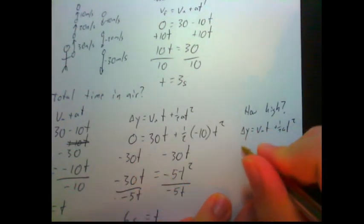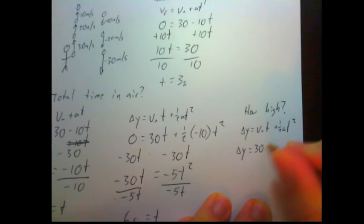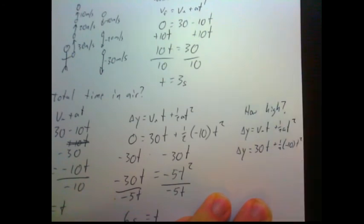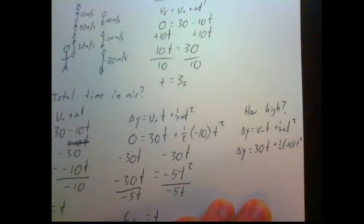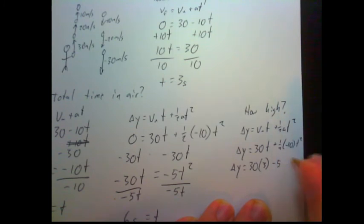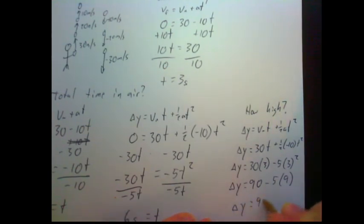Delta y is what we're looking for. 30t plus one-half negative 10 t squared. Oh, we have the t, don't we? We know how long it took to get to the apex. Three seconds. Delta y equals 30 times 3 minus 5 times 3 times 3 is 9. Delta y equals 90 minus 45 for a total height at the apex, because the apex occurred at three seconds, of 45 meters.